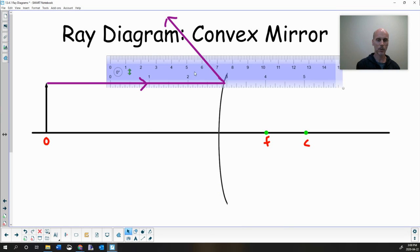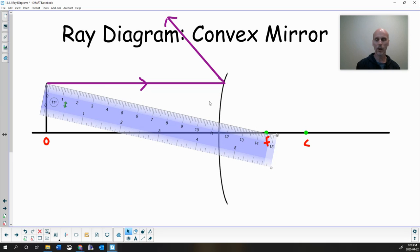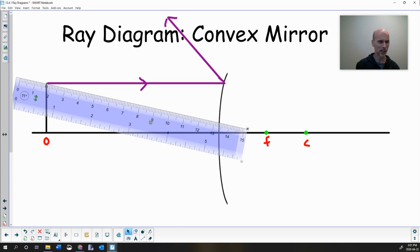The ray that goes parallel to the principal axis reflects away from this focal point here. Second ray. You might remember that there was a ray that went through a focal point. In this case, we can't, we can head towards that focal point, but you'll see that we're not going to actually get there. But let's just line up our ruler with the focal point and the tip of the object. Now we'll use our ruler starting at the tip of the arrow, head towards the focal point, but boom, cannot get there.